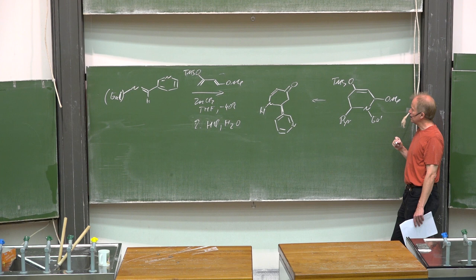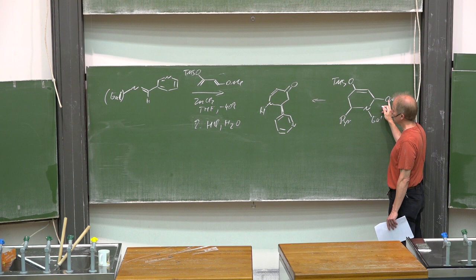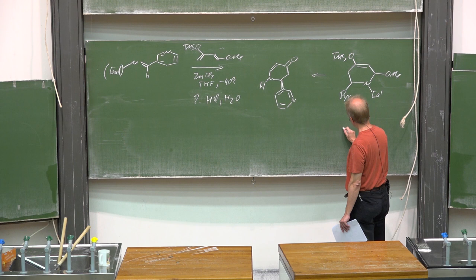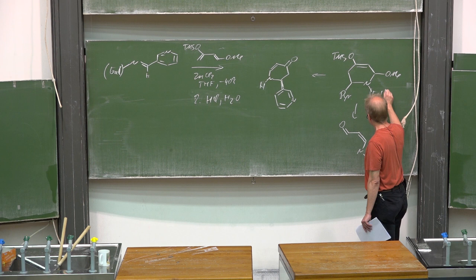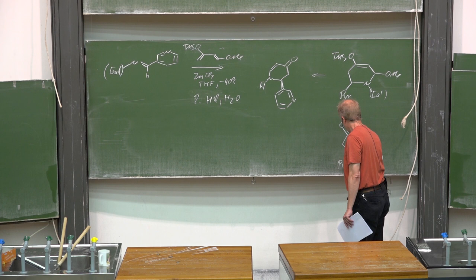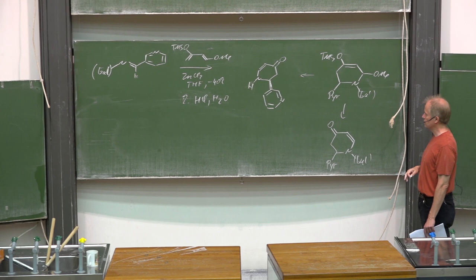After the Diels-Alder reaction, you will have this structure, and under the reaction conditions you will have that methoxy group eliminated. This is the same structure. Now we have also the chemoselectivity and regioselectivity of the Diels-Alder reaction.